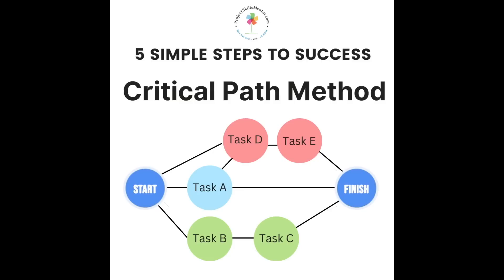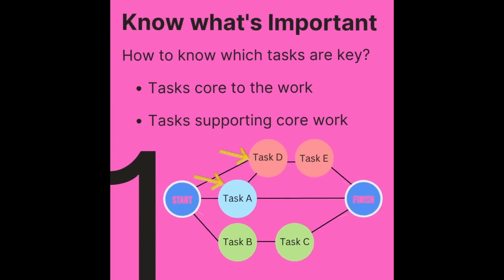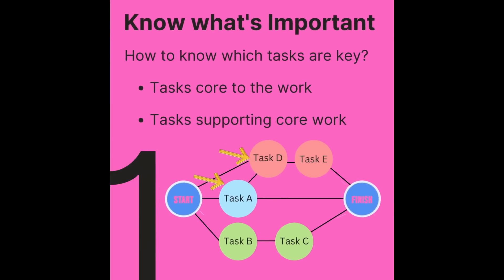How to create a critical path — five simple steps in one minute. First, know what's important. You've got to organize your tasks based on the core tasks and those that support the core tasks.